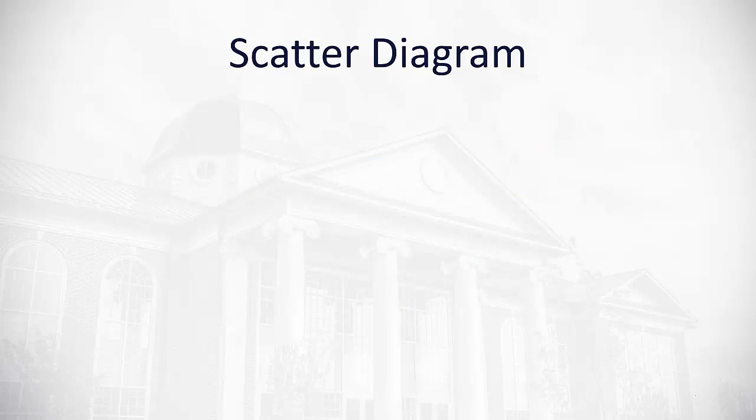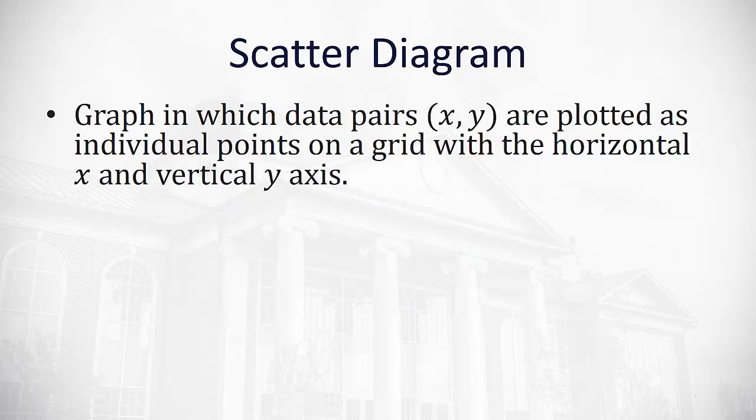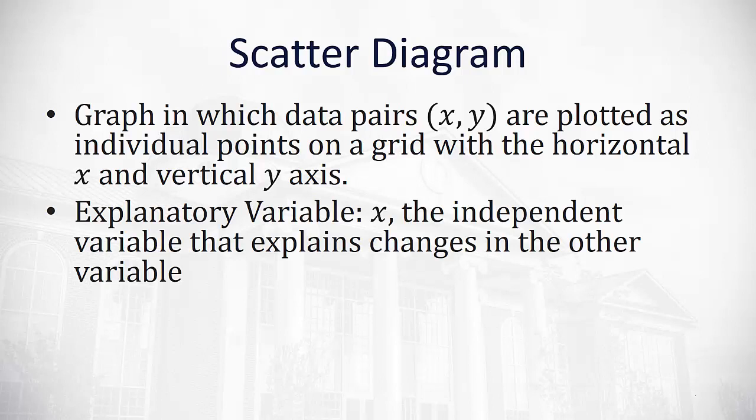First, a scatter diagram. Scatter diagrams are a graph in which pairs are plotted as individual points on a grid with a horizontal x and vertical y-axis. We have names for each of these variables.